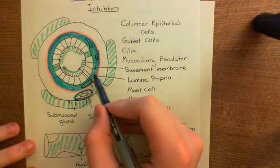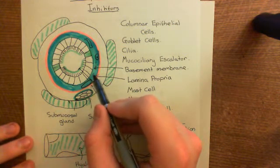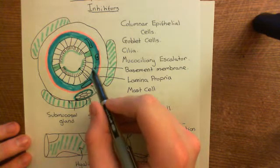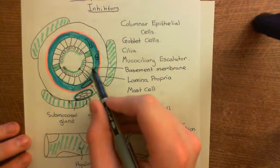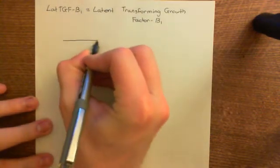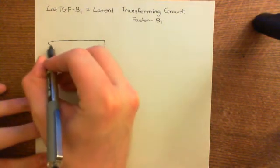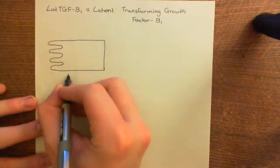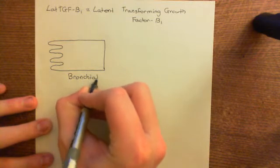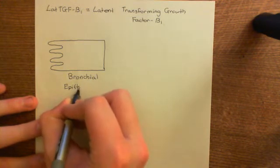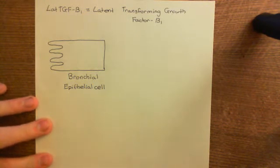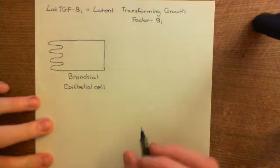The eosinophils are in the lamina propria, secreting latent TGF-β1. This latent TGF-β1 is activated to TGF-β1 by protein complexes in the cell membrane of the epithelial cells — these protein complexes are integrins. So here is a bronchial epithelial cell, drawn larger than before, with cilia on top.